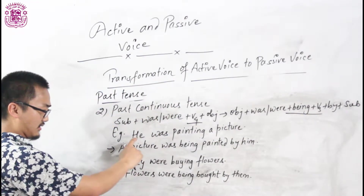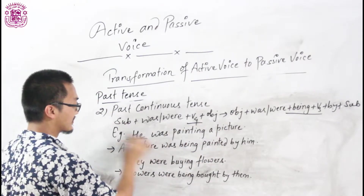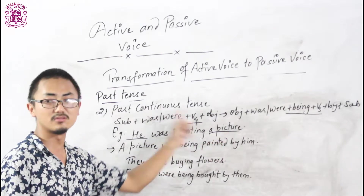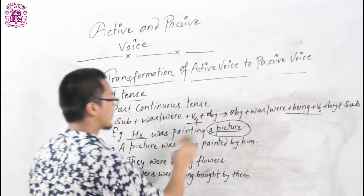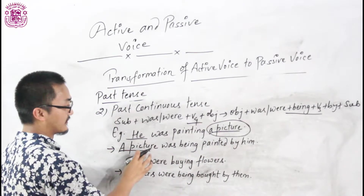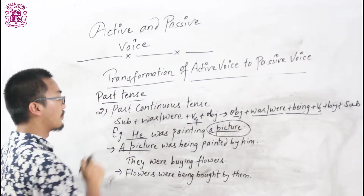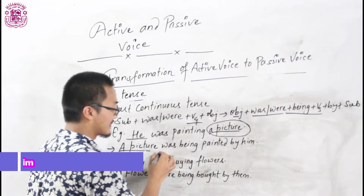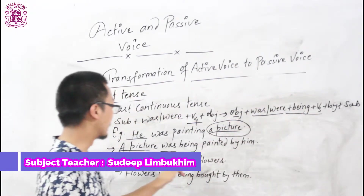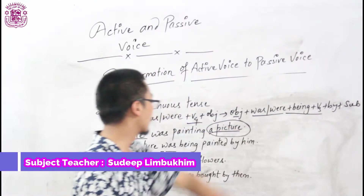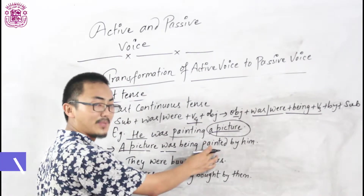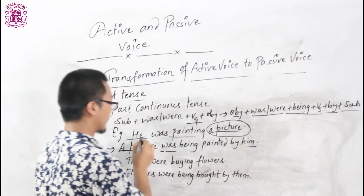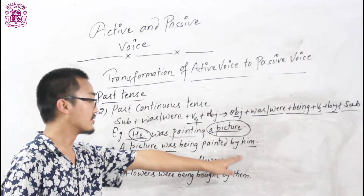Let's do some examples. 'He was painting a picture.' Here 'he' is used as subject, 'a picture' is used as object. According to our rule, we change subject into object and object into subject. So we use 'a picture' as subject. 'A picture' is singular and singular takes 'was'. So: 'A picture was being' — then we use V3. The V3 of 'painting' is 'painted'. So: 'A picture was being painted by him.' While using 'he' as object, we have to change 'he' into 'him'.